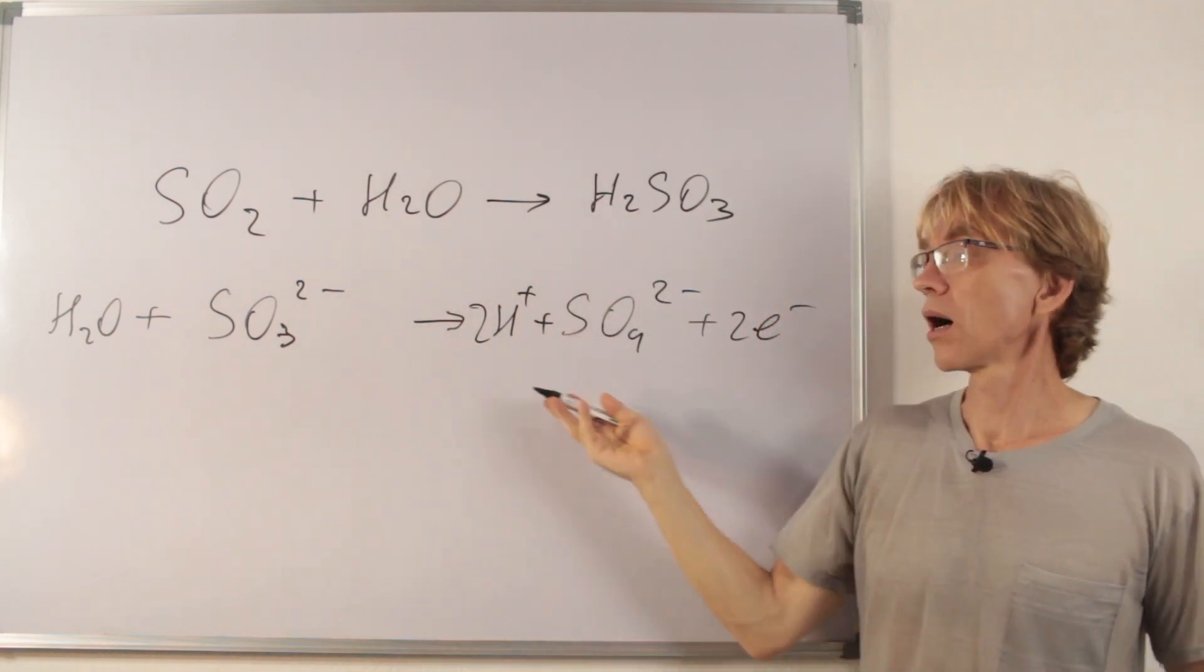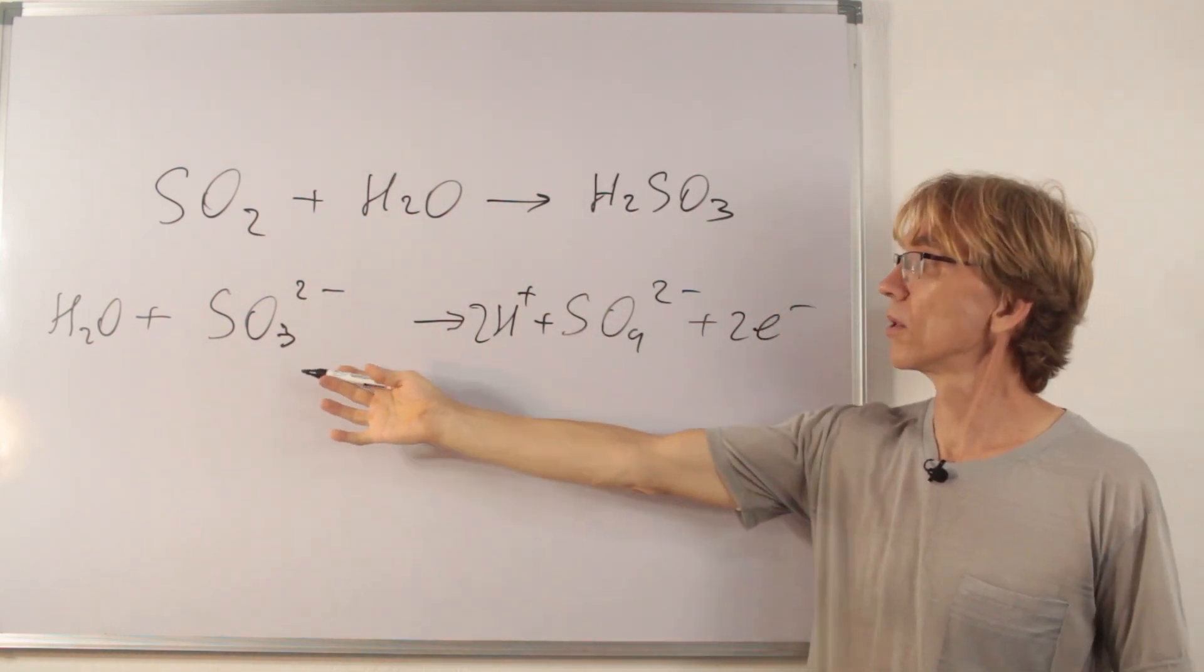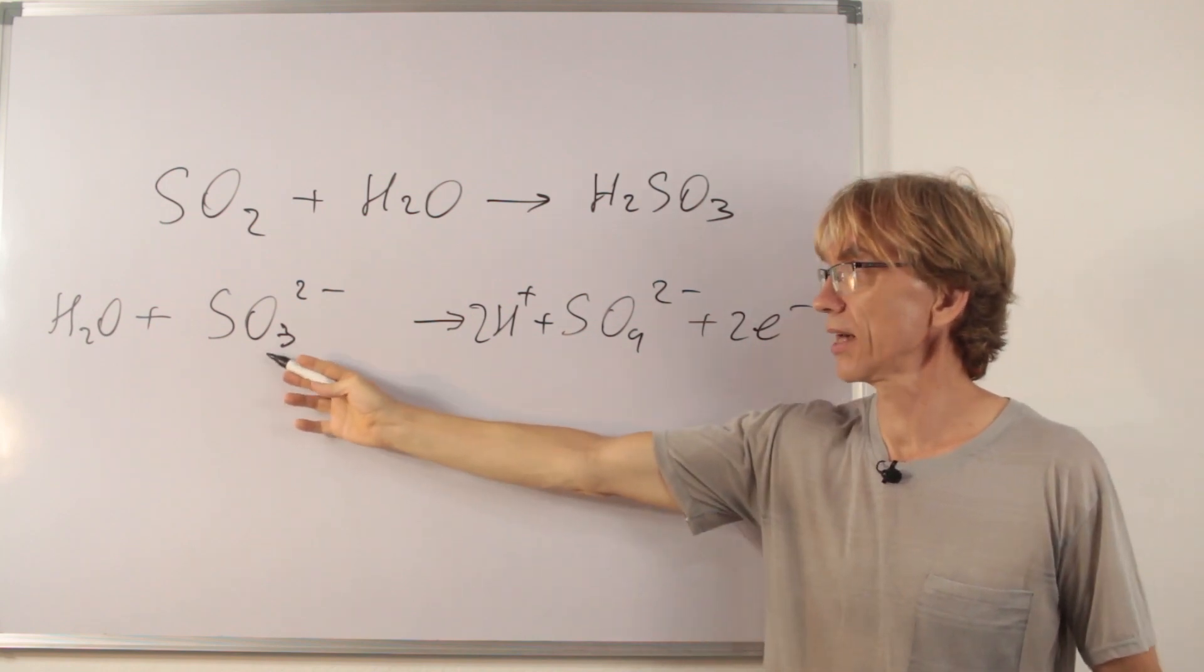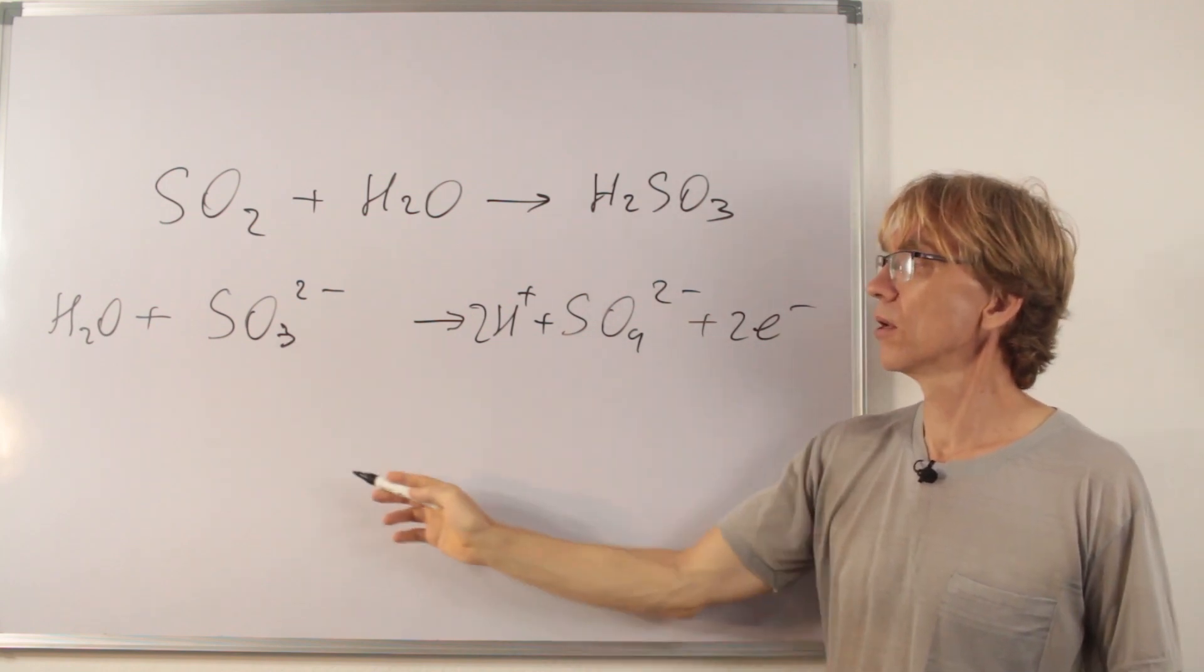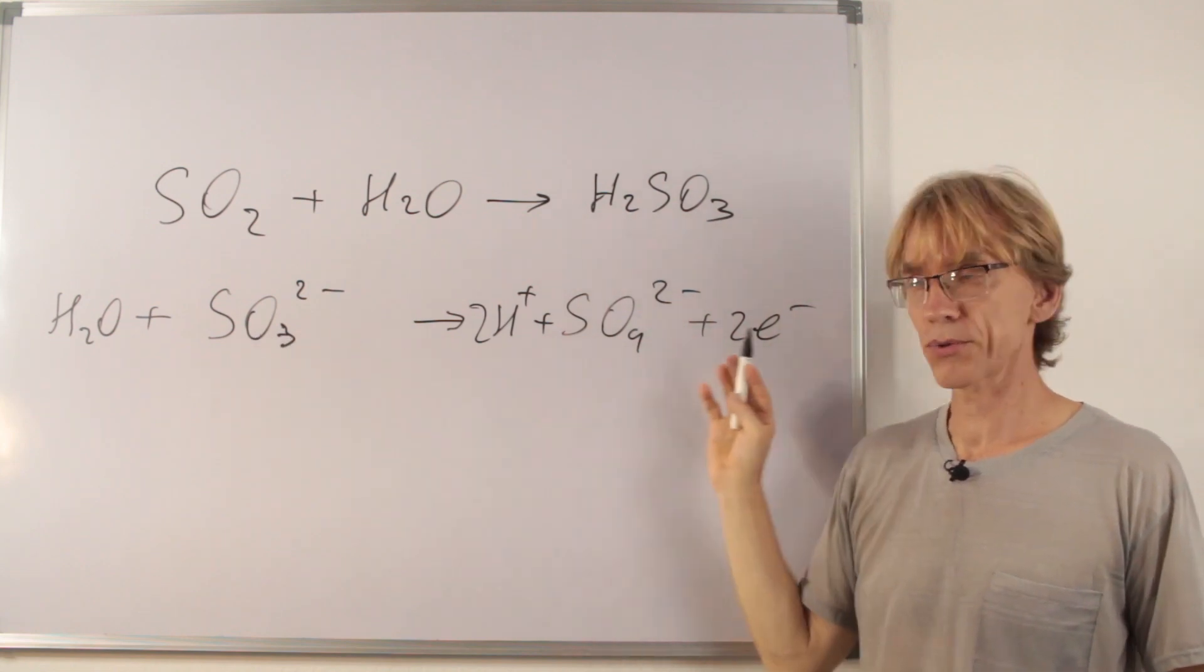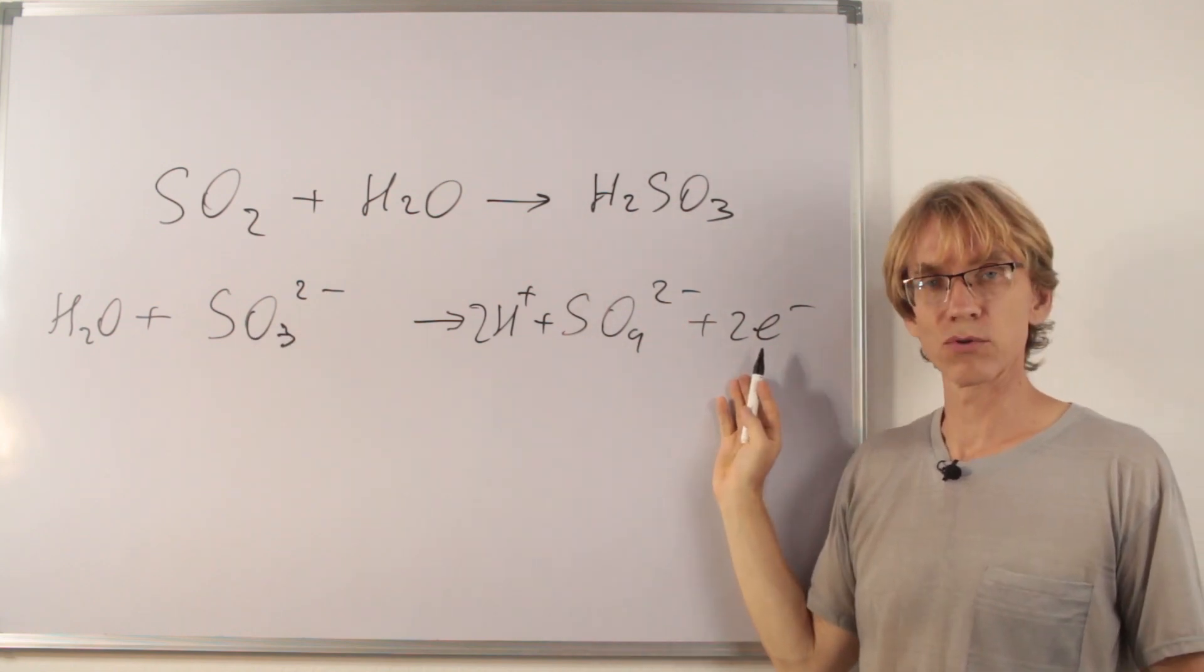That's the half equation for oxidation of sulfite ion into sulfate. For every mole of sulfite ion, we have two moles of electrons produced.